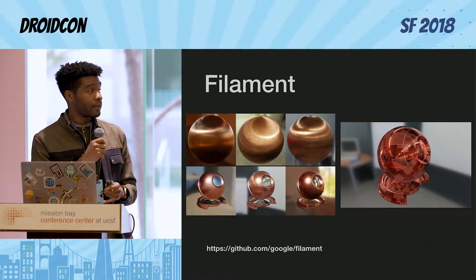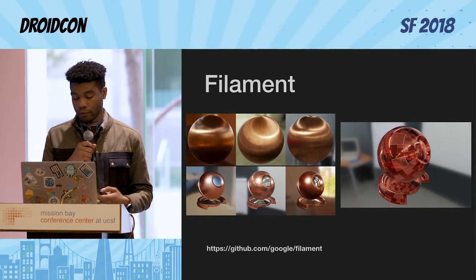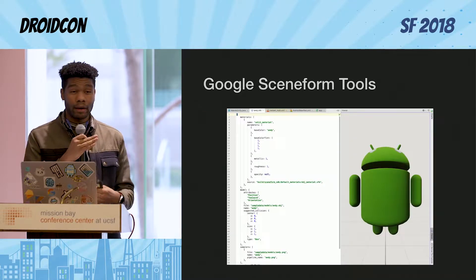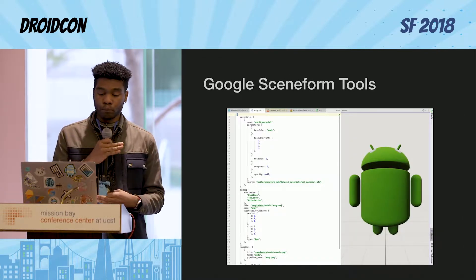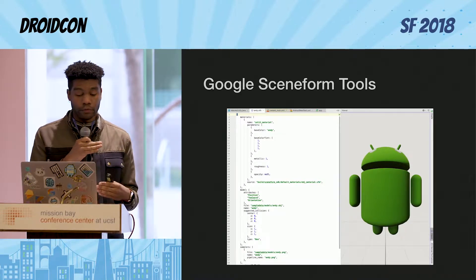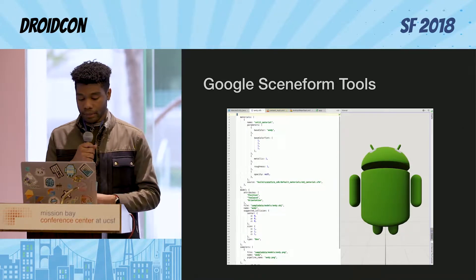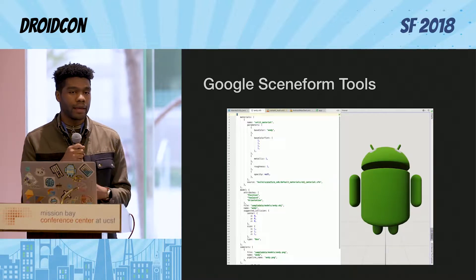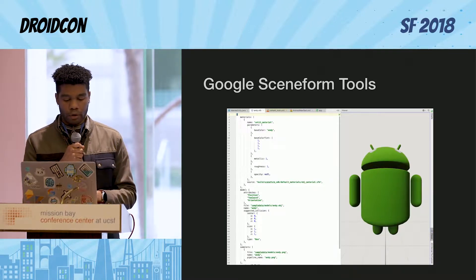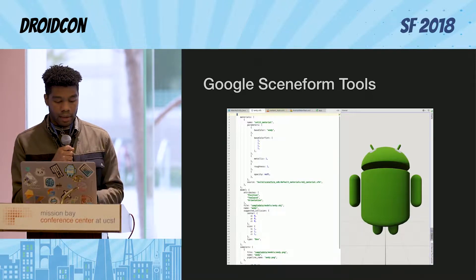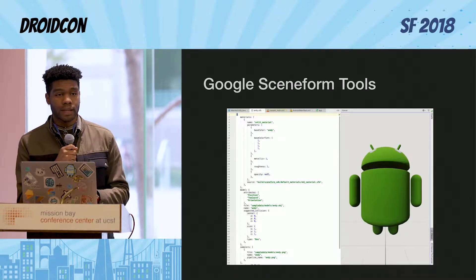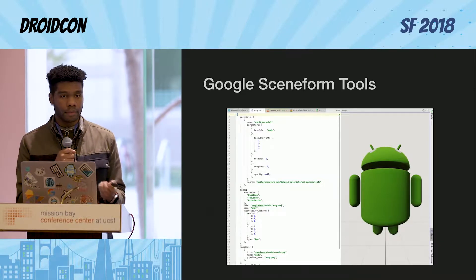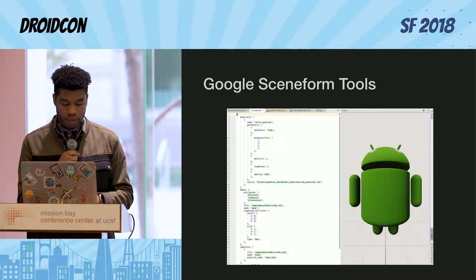There is a plugin that goes with Sceneform to make it easier to modify AR objects inside of Android Studio. It's called Google Sceneform Tools, it's currently in beta, and it allows you to import, view, and create 3D assets. It supports many different file formats, much like ARCore at the moment. You can find the plugin in the plugin browser in Android Studio.